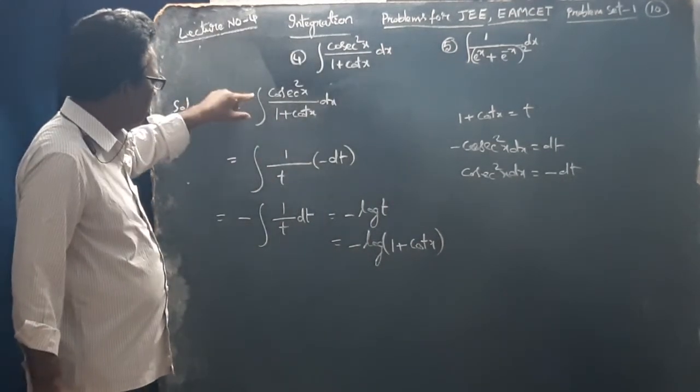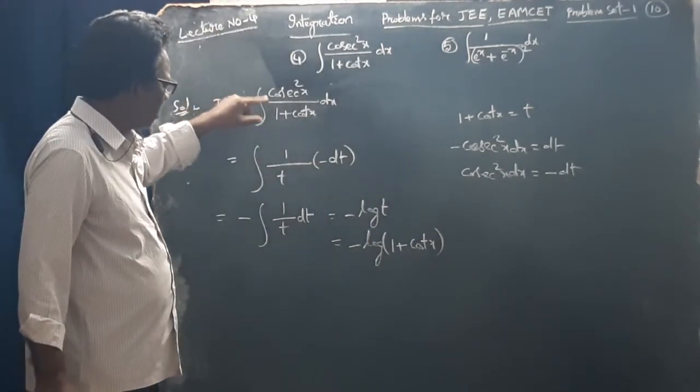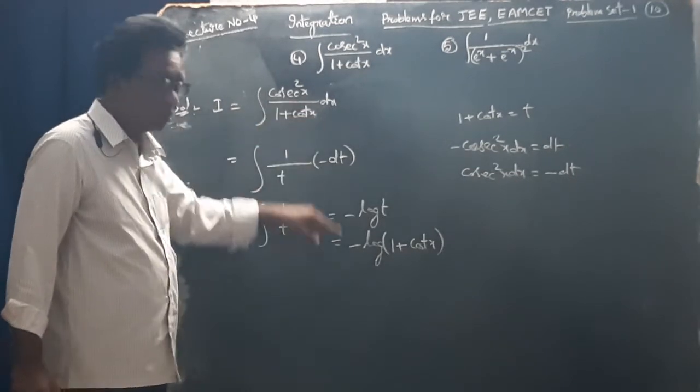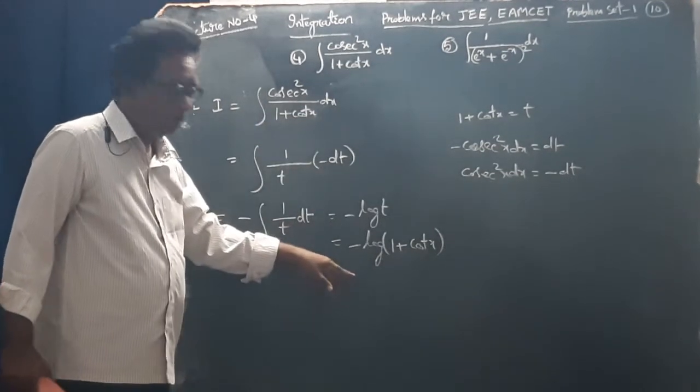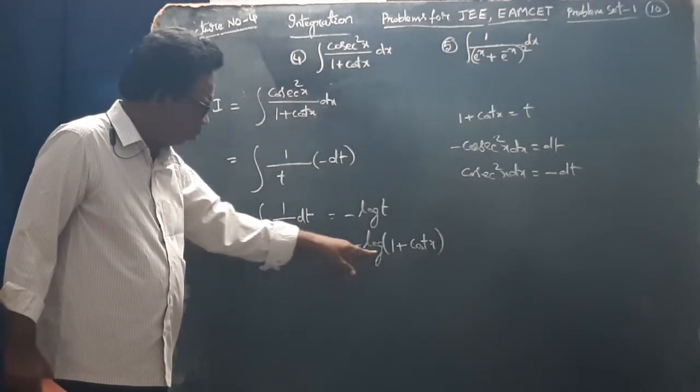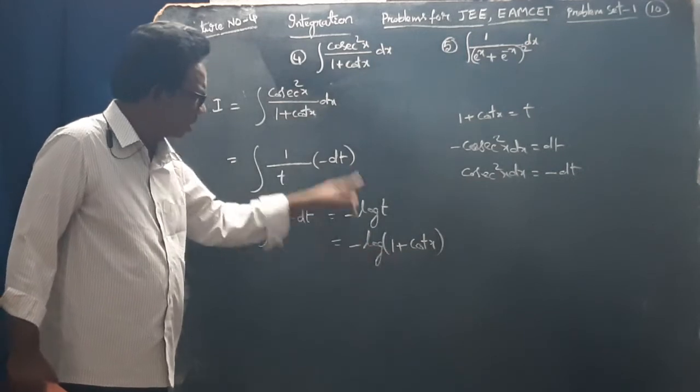So integral of cos x by 1 plus cot x dx is equal to minus log of 1 plus cot x. This is the answer.